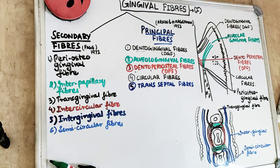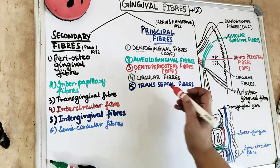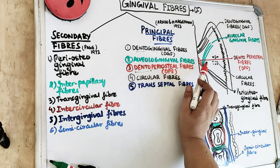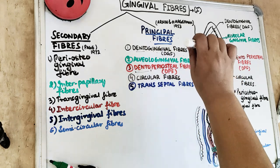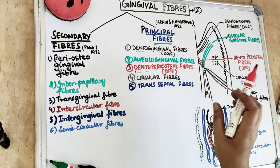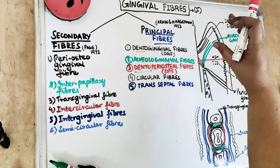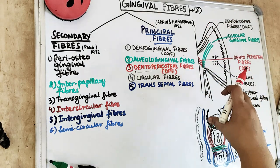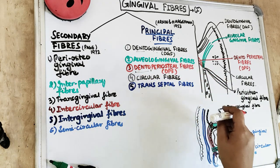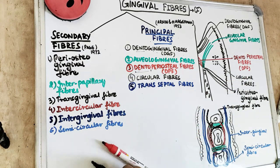The dento-periosteal fibers run apically into the vestibular region. Breaking the term: from dental (tooth) to the periosteum. These fibers go from the tooth into the bone and protect the PDL. They are anchor fibers — attaching the tooth to the periosteum of the bone — running apically into the vestibular and lingual bone crest and terminating in the tissues of the attached gingiva.